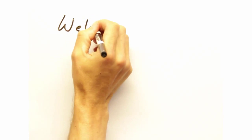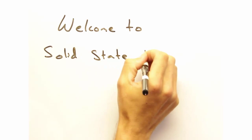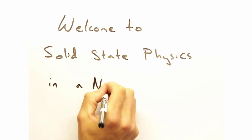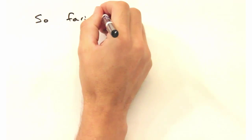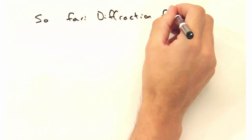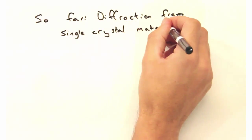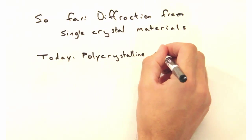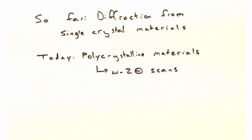Hello everyone, and welcome back to Solid State Physics in a Nutshell, brought to you by the Physics Department at the Colorado School of Mines. My name is Eric. And I'm Nicole. So far we've looked at diffraction from single crystalline materials, but today we're going to look at polycrystalline materials and introduce the main measurement technique, omega-2-theta scans.